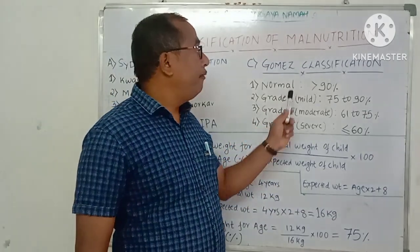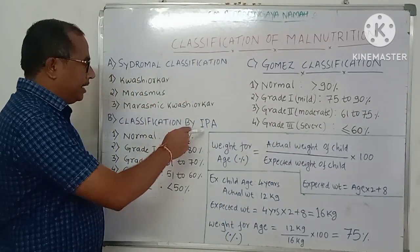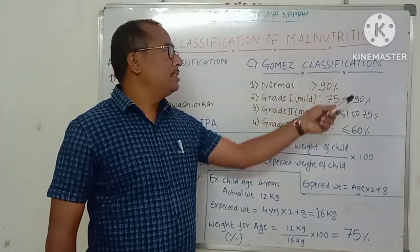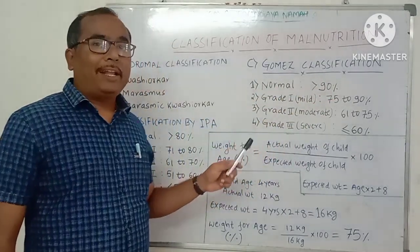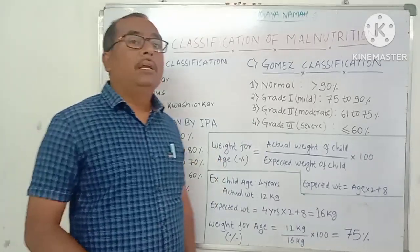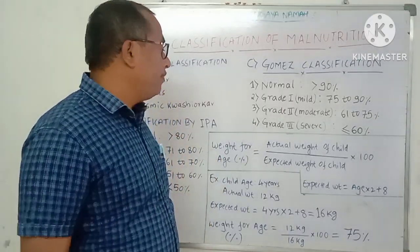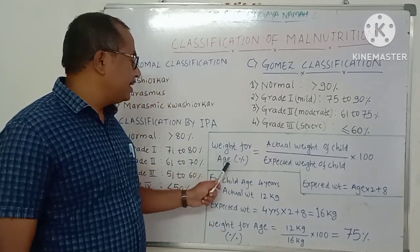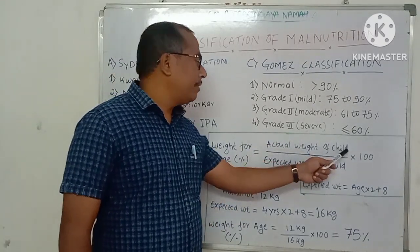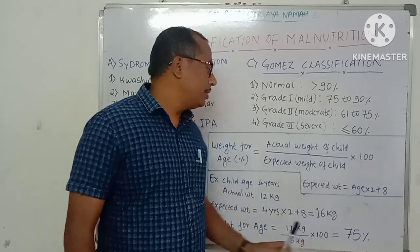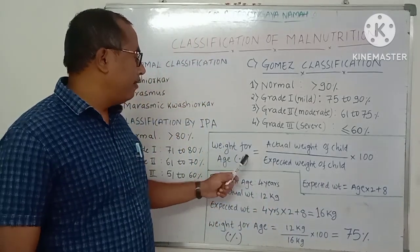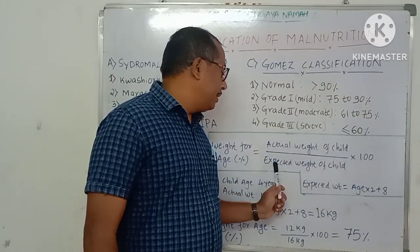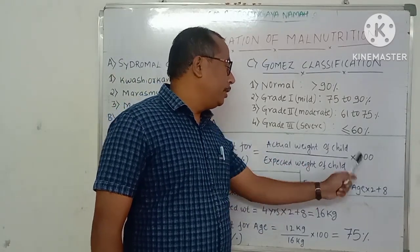Both the Indian Pediatric Academy and Gomez classification use weight for age percentage to grade malnutrition. The formula is: weight for age percentage = (actual weight of the child ÷ expected weight of the child) × 100.